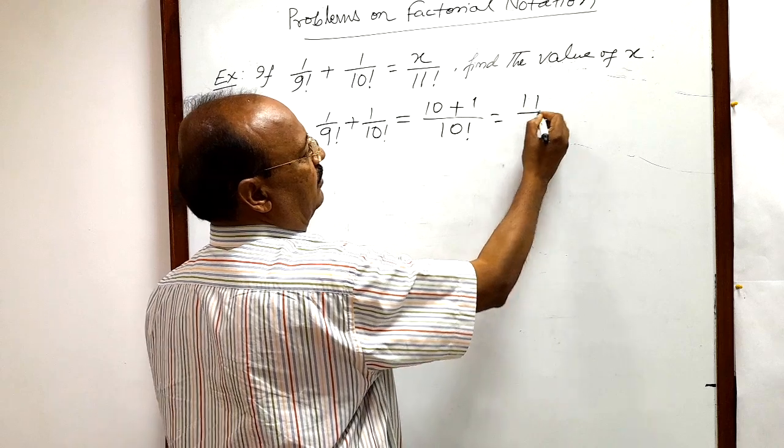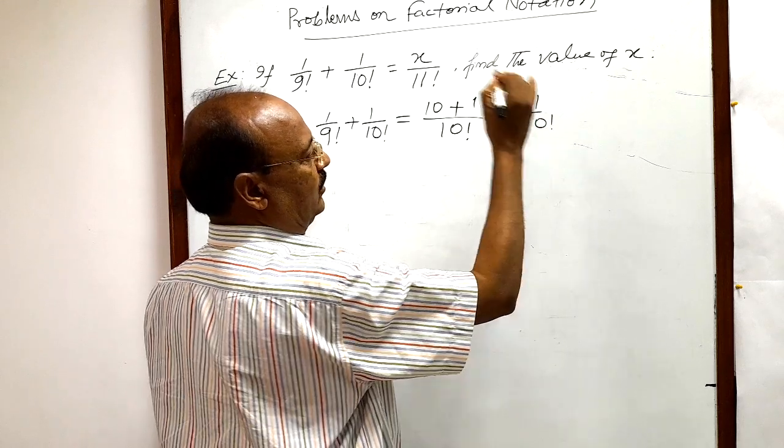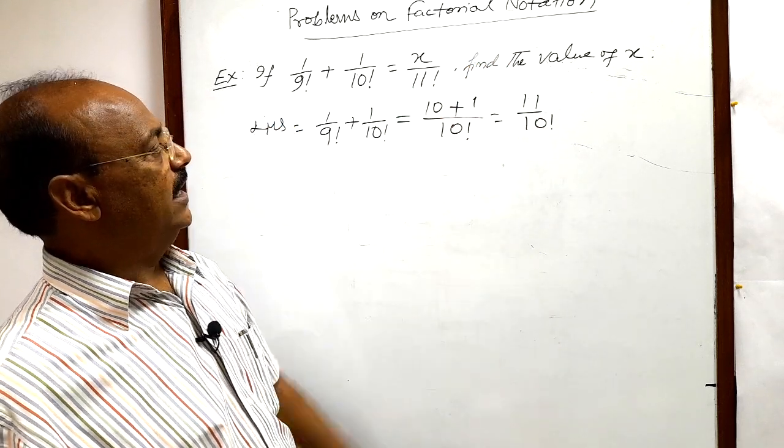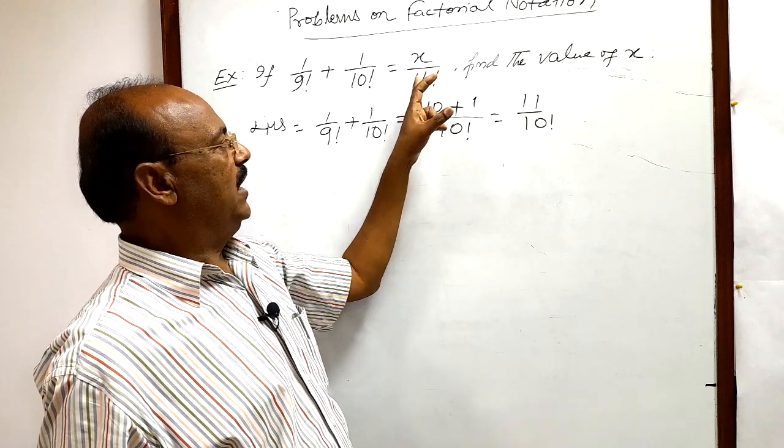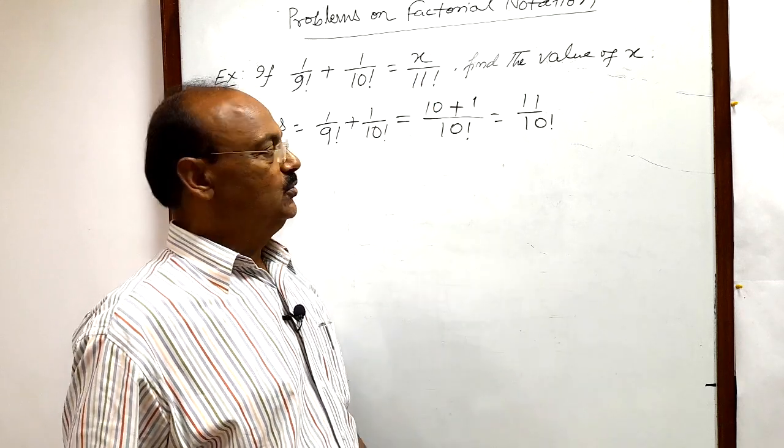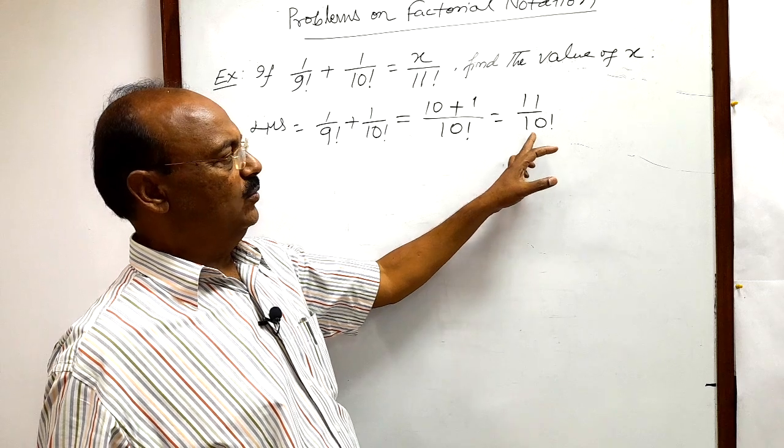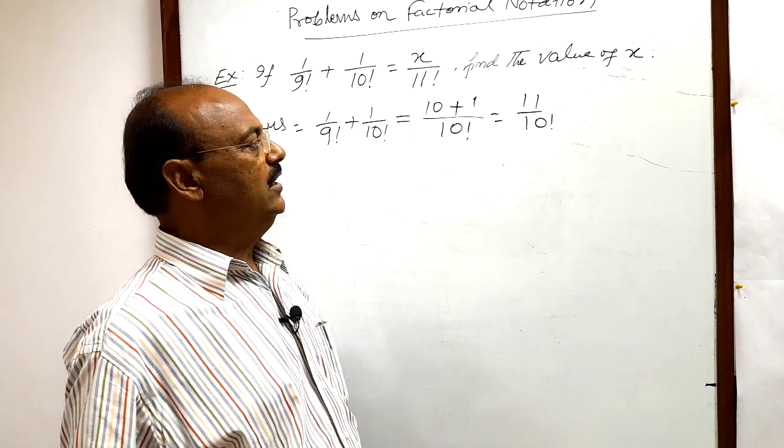So finally we are getting 11 by 10 factorial, but you see here in the right hand side we are having x by 11 factorial. So we have to make this 10 factorial into 11 factorial. How we can get it?